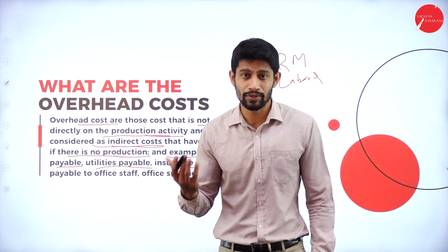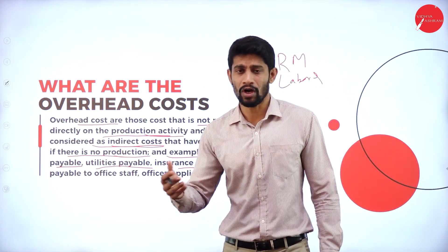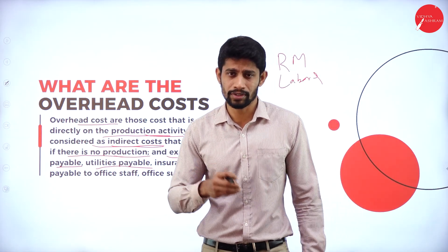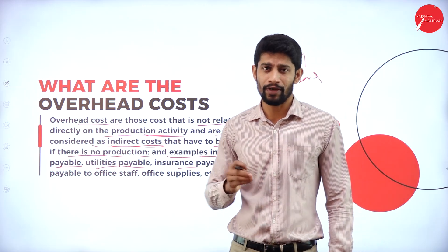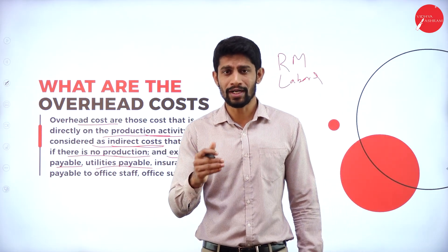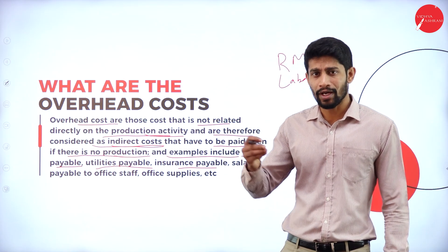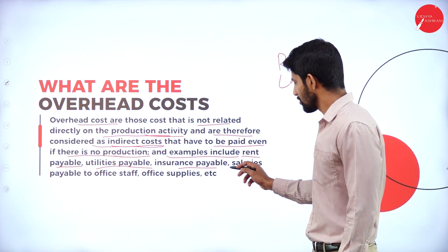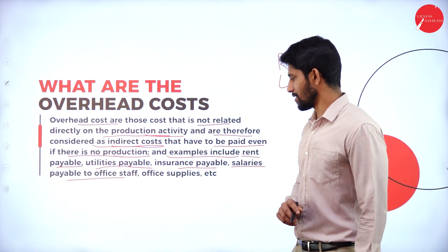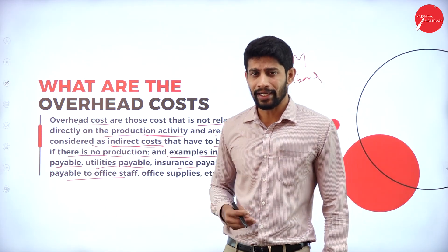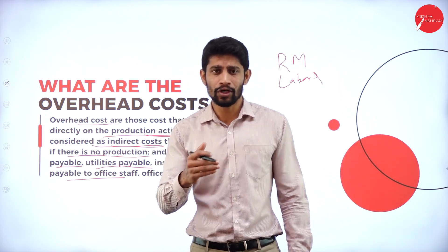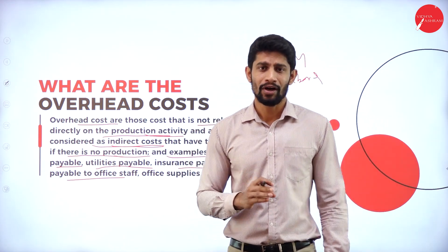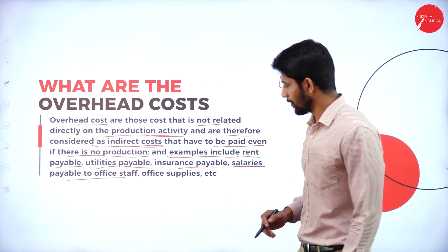For insurance, for example fire insurance — even though you are not producing the product, you are supposed to pay the insurance premium. That will not relate to your production activities. Whether you are producing or not, you are supposed to pay the insurance cost. Next, salaries payable to office staff. If you have hired any office staff, even though you are not producing the product, if the office people are working, you are supposed to pay salary to them. That is also indirect cost.